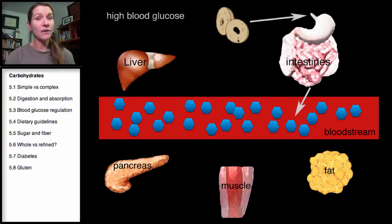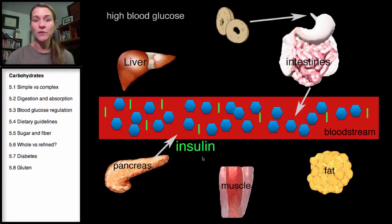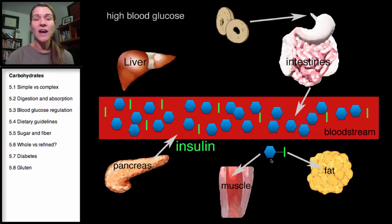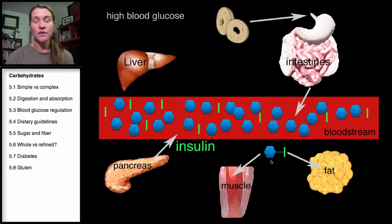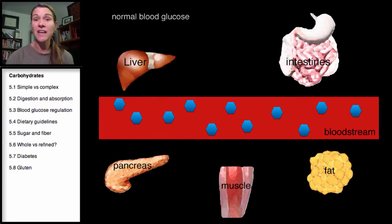When you eat a highly refined product such as a bagel, the blood sugar goes up. How does the body respond to this? The pancreas is going to release insulin — represented here with the 'I' — and insulin is released in response to high blood glucose. Insulin's role is to assist in the transport of glucose into the cells, particularly the muscle cells and the fat cells. The glucose then leaves the bloodstream and goes into the cells.